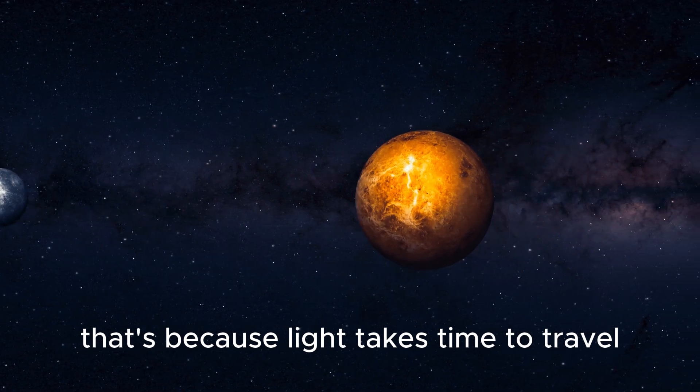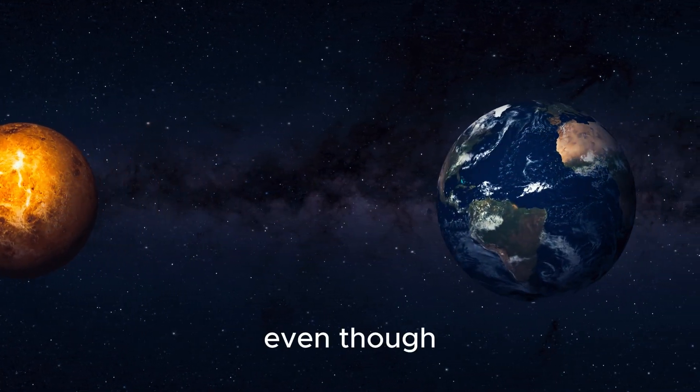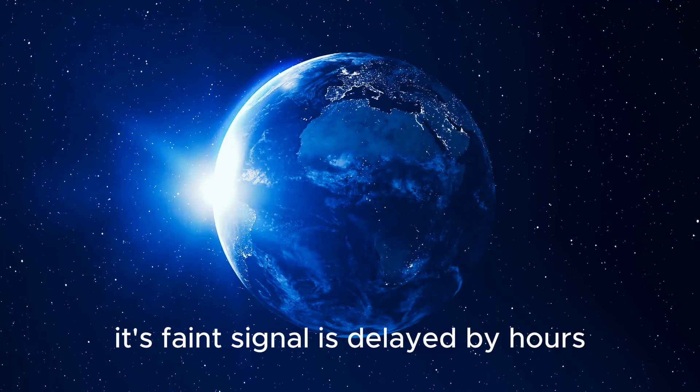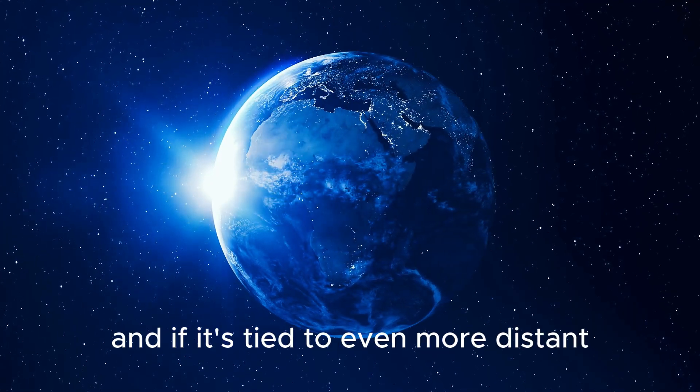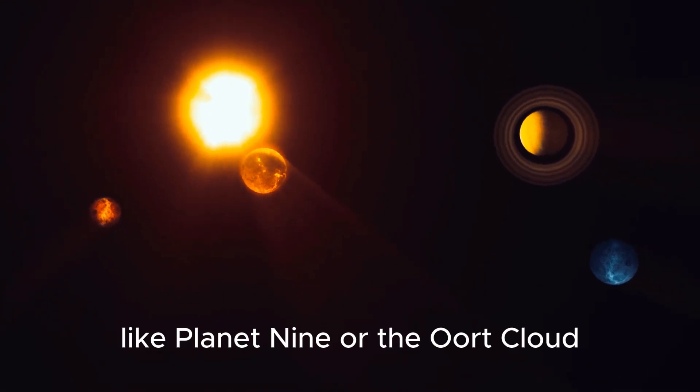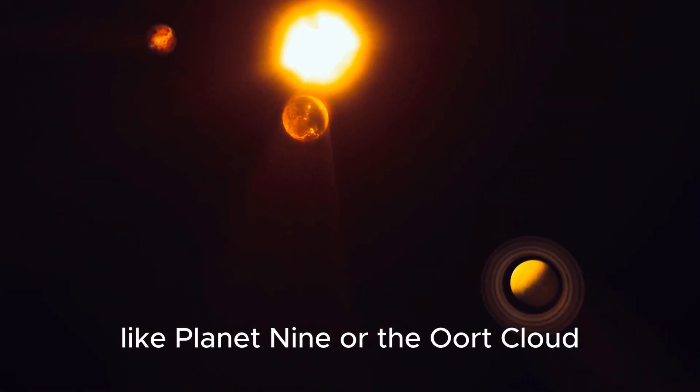That's because light takes time to travel. Even though this object is still within our solar system, its faint signal is delayed by hours. And if it's tied to even more distant gravitational effects, like Planet 9 or the Oort cloud, then we could be seeing evidence of interactions that began thousands or even millions of years ago.